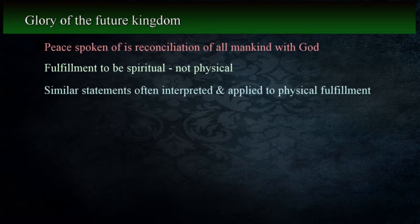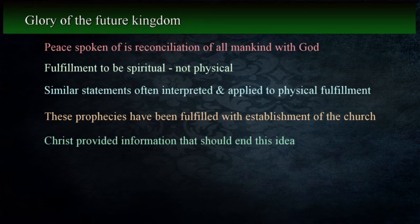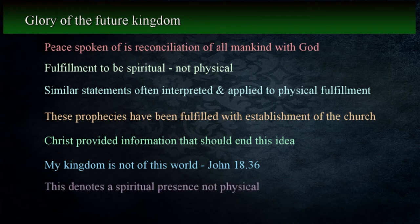Similar statements are found throughout the writings of the prophets and are frequently interpreted and applied to a physical fulfillment. The fact is, these prophecies have been fulfilled with the establishment of the church. Christ provided information that should end the idea that there will be a physical kingdom when he told Pilate, 'My kingdom is not of this world' in John 18:36, denoting a spiritual presence, not a physical one.